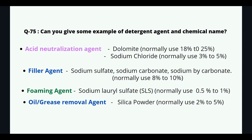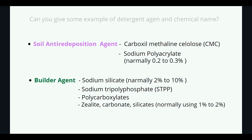Can you give examples of detergent agents and their chemical names? Acid neutralization agents: dolomite, normally used 18% to 25%; sodium chloride, normally used 3% to 5%. Filler agents: sodium sulfate, sodium carbonate, sodium bicarbonate, normally used 8% to 10%. Foaming agent: sodium lauryl sulfate (SLS), normally used 0.5% to 1%. Oil and grease removal agent: silica powder, normally 2% to 5%. Soil anti-redeposition agent: carboxymethyl cellulose (CMC), sodium polyacrylate, normally 0.2% to 0.3%.